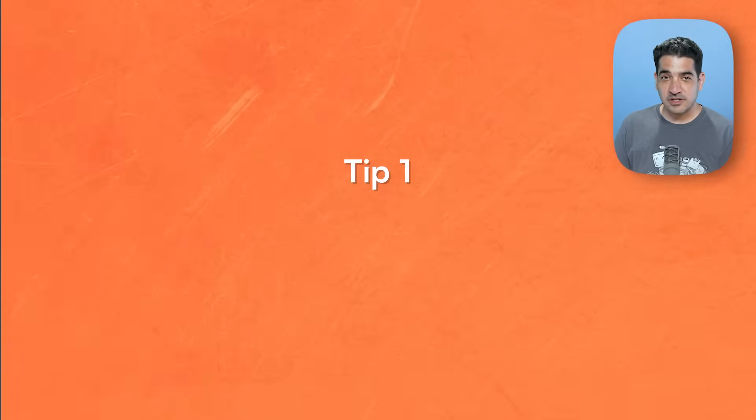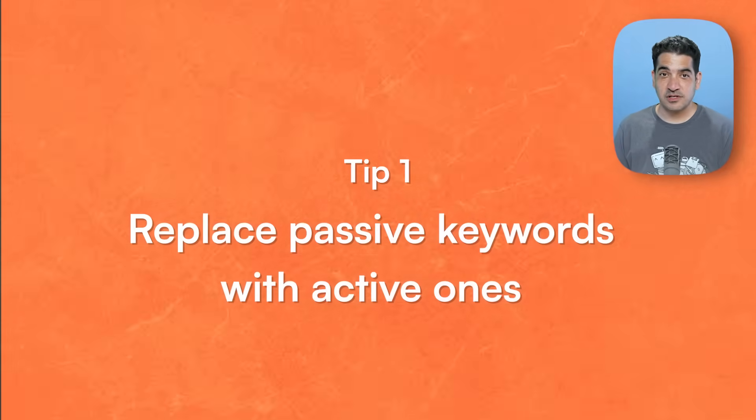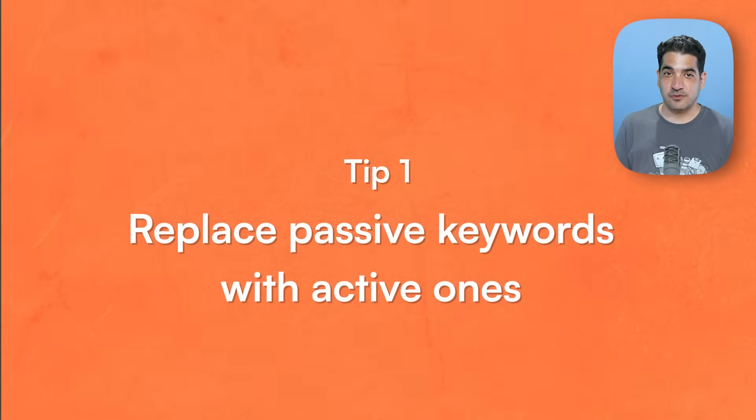So clearly, you need to use keywords in your screenshots. Here are my six tips to help you do it right. The first one is replace passive keywords with active ones. By passive, I mean words that don't have any intent and no one is searching for, like "easy to use." Replace those with the same type of keywords you'd put into your app's name, subtitle, or keyword list — full of intent and actionable.